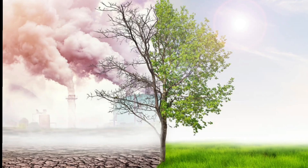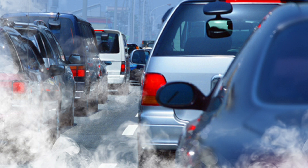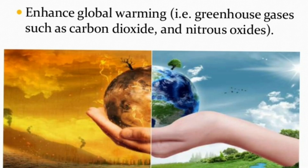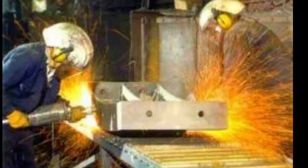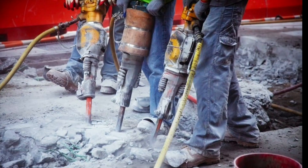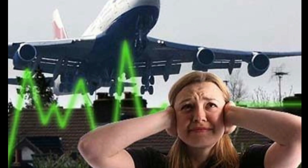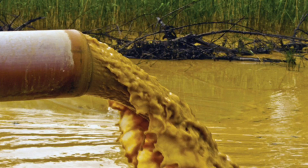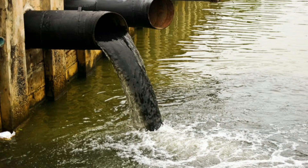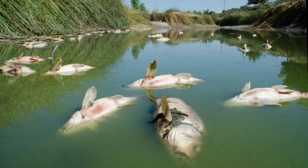Modern technology also affects our surrounding environment. Any kind of pollution is harmful to human beings and other living things. Factories and vehicles create a lot of dangerous gases and pollute the air, causing diseases like asthma. Heavy machines, factories, vehicles, and airplanes create a lot of sound pollution. Different kinds of factories and mills also create chemical waste which enters rivers and lakes, polluting the water, which is very harmful to living things.